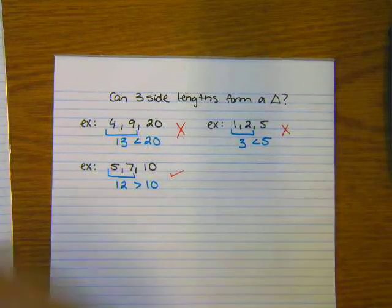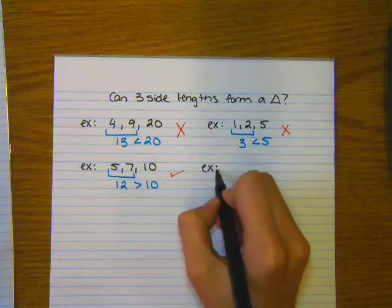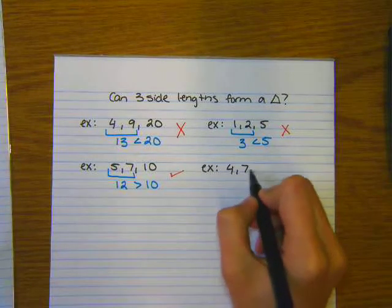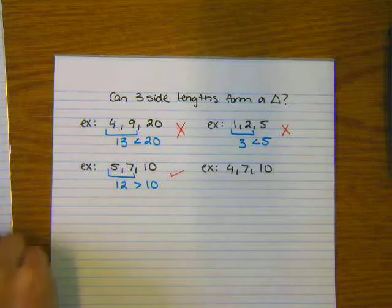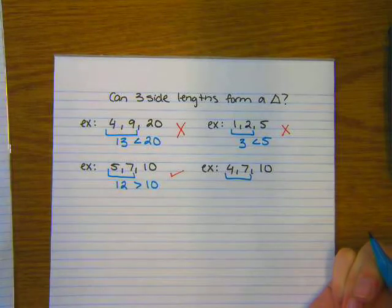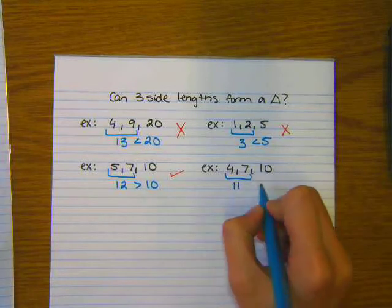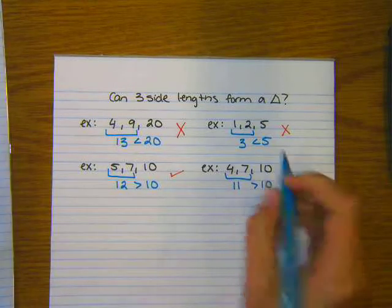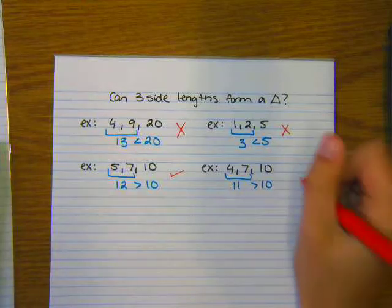And then one more example, we have, let's say, side lengths are 4, 7, and 10. My two smaller side lengths are 4 and 7. 4 plus 7 is 11. Yep, 11 is greater than 10, so these do form a triangle.